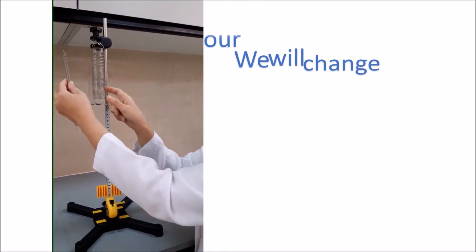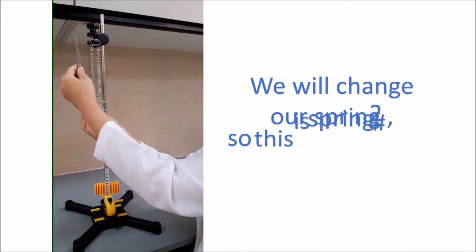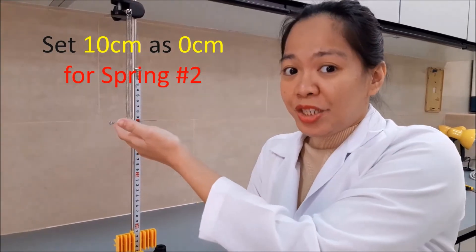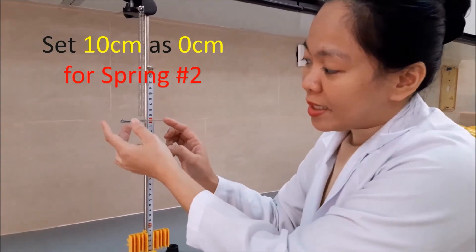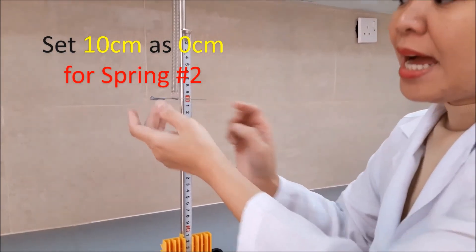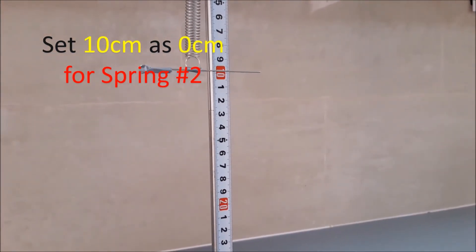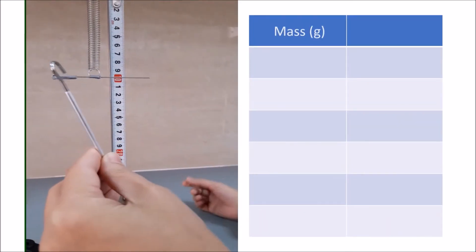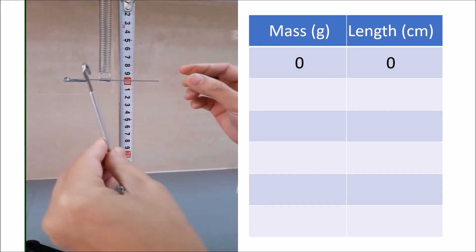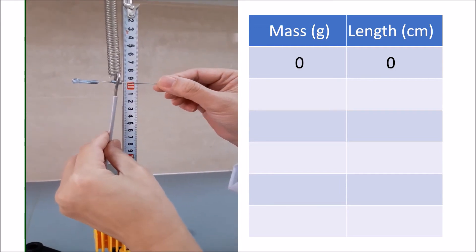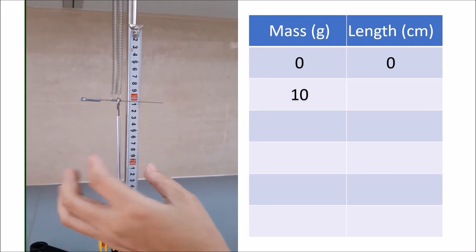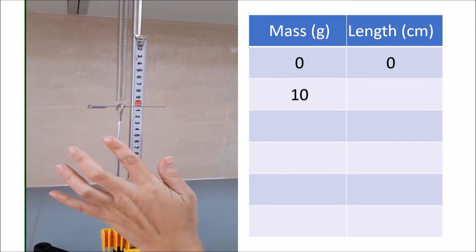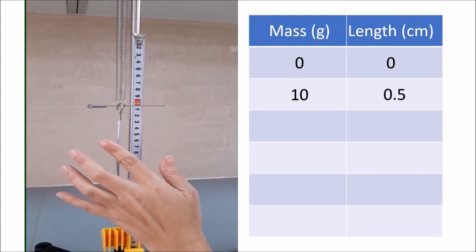I will now change our first spring to our second spring. Now we can see we already changed our spring, and we set 10 as our zero. I will put our weight holder, which already weighs 10 grams. It reads 0.5 centimeters.